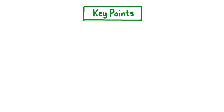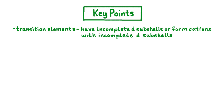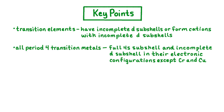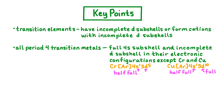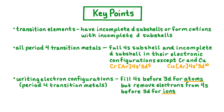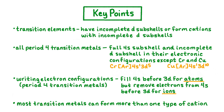Now let's summarize what we've learned. Transition elements are elements which have incomplete D subshells or form cations with incomplete D subshells. All period 4 transition metals have electron configurations with full 4s subshells and incomplete 3d subshells, except for chromium and copper. In chromium, the 4s and 3d subshells are each half full, and in copper, the 4s subshell is half full and the 3d subshell is completely full. When writing electron configurations for atoms of period 4 transition metals, electrons fill the 4s subshell before the 3d subshell. However, when writing the electron configuration for period 4 transition metal ions, electrons are removed from the 4s subshell before the 3d subshell. Because most transition metals have multiple oxidation states, they can therefore form more than one type of cation.